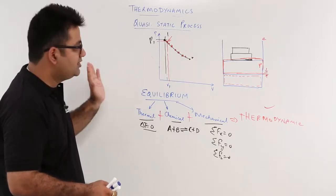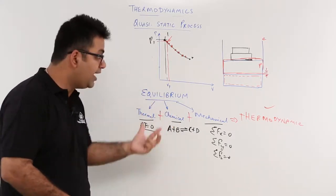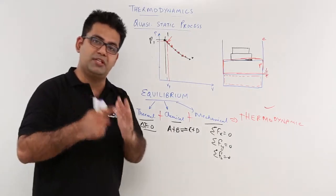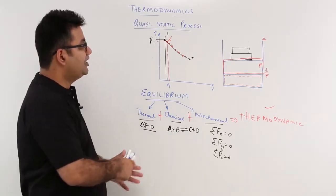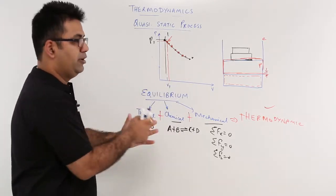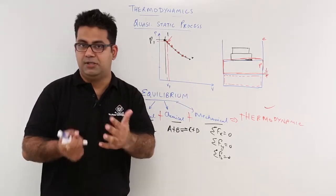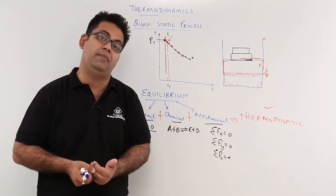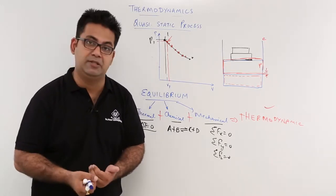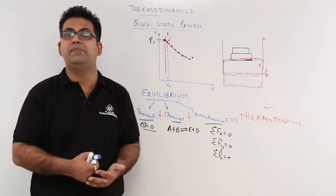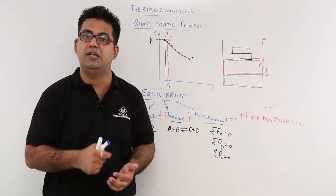I hope you understood the concept of the quasi-static process and, more importantly, what equilibrium is — specifically thermodynamic equilibrium as the coexistence of thermal, chemical, and mechanical equilibrium in a system. This brings us to the end of the introductory part of thermodynamics. In the next video onwards, we go to the zeroth law of thermodynamics, in which we start talking about temperature and its measurement, as the zeroth law forms the basis of temperature measurement.